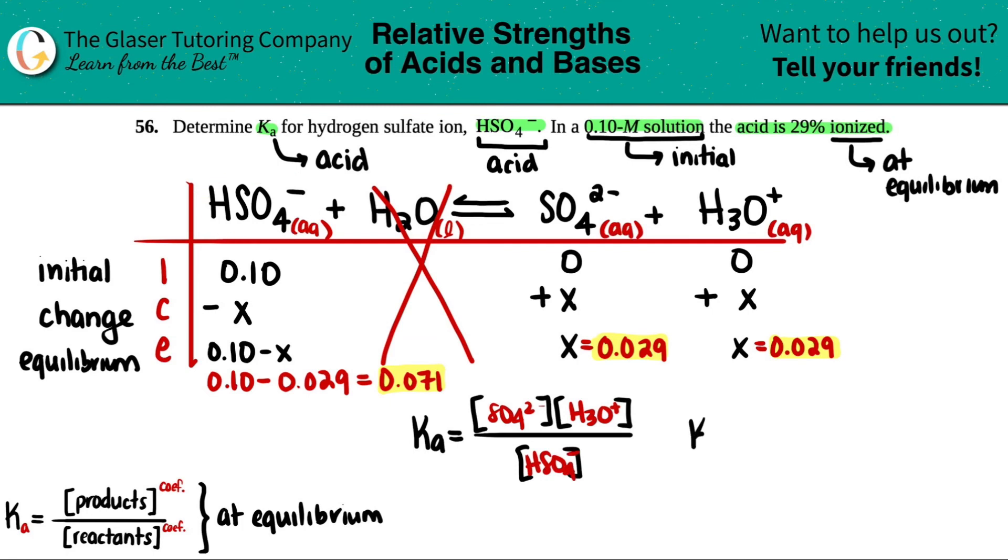Let's put in the numbers. 0.029 times 0.029 divided by 0.071. And now we're good to go. Ka equals 0.029 times 0.029 divided by 0.071, and we get 0.012. Beautiful.